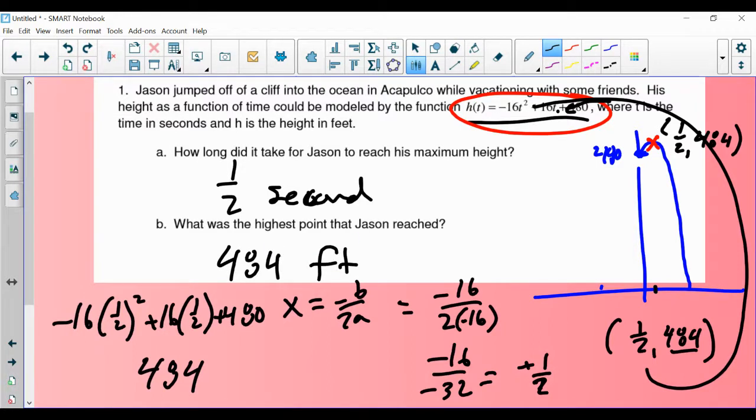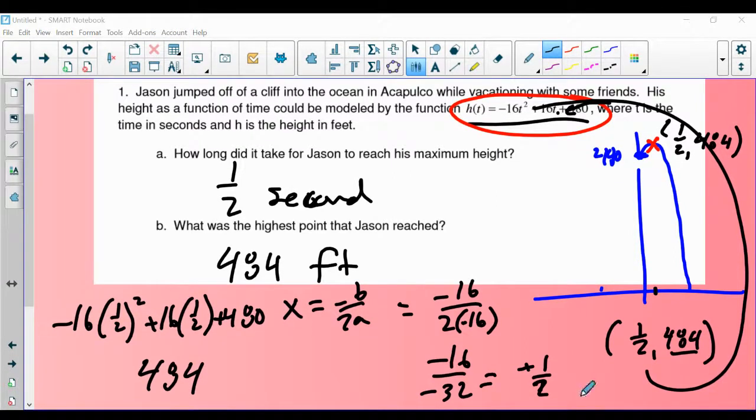You're going to see some other examples of these vertical motion model questions come into play in the future. I'm going to ask questions like, at what point did Jason reach the water? Or I might ask, hey, what was his height at four seconds or something like that? So there will be other questions that come into play. Please do not be afraid to reach out if you guys have any questions. Thank you.